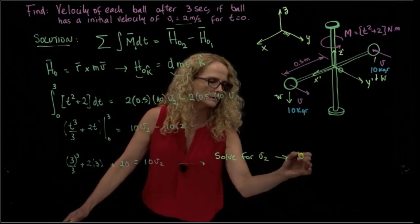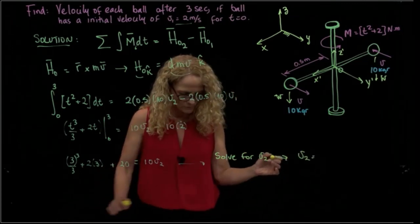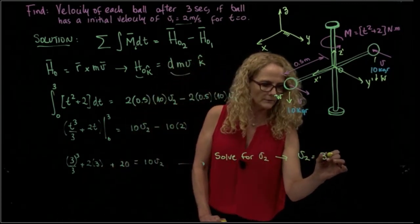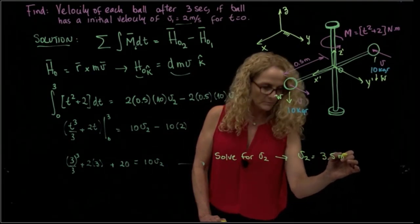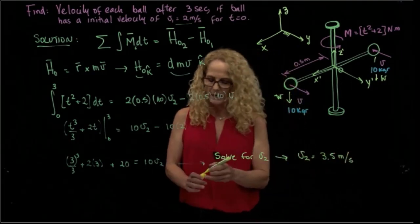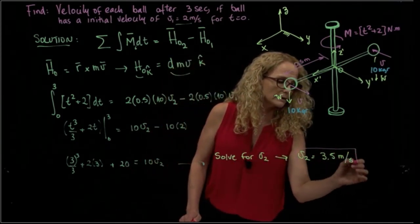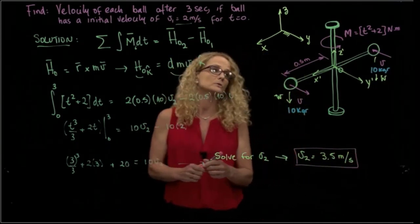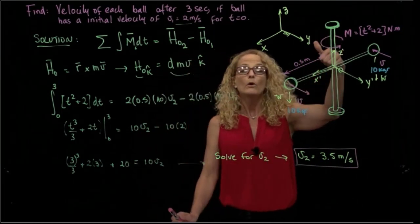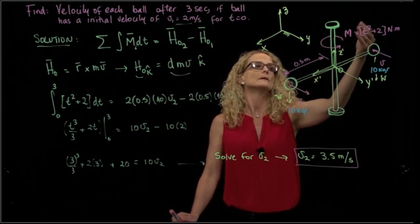So for v2, we get that v2 is equal to 30.5 meters per second. And it gave us a bigger value than the one that it had initially, because we are applying a moment that is increasing in time.